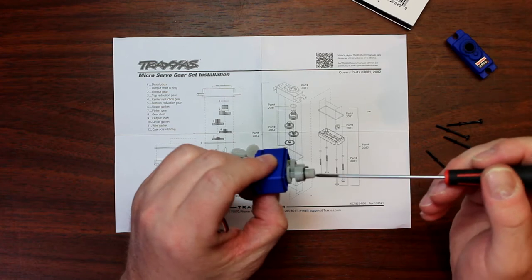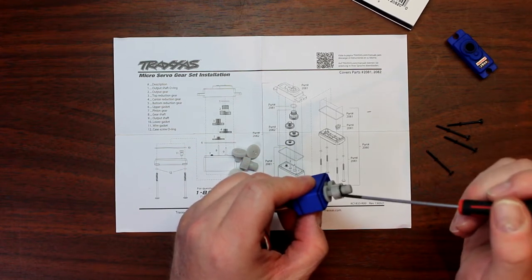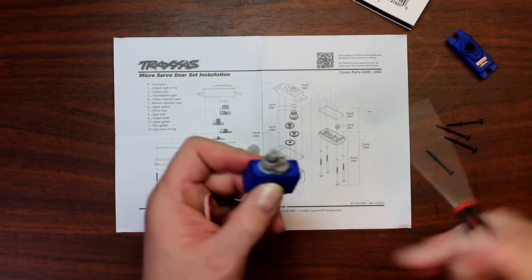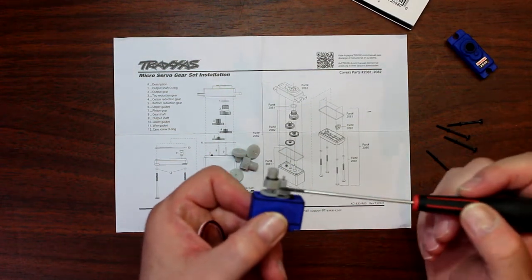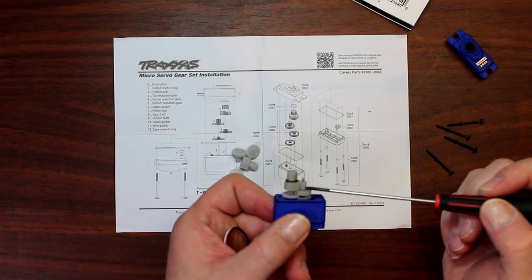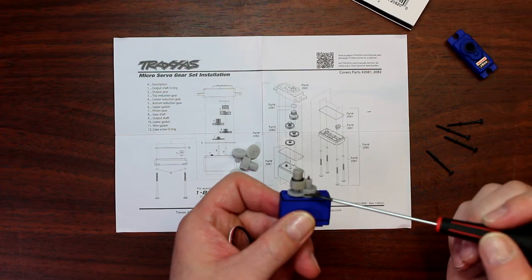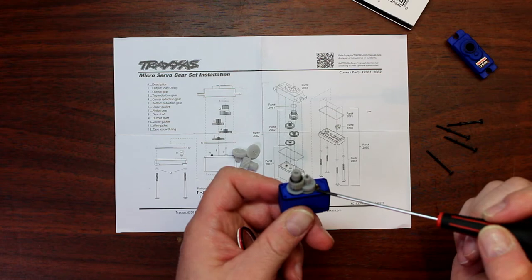You want to notice the output shaft o-ring that's right here, then you have the output gear. After that you'll have the top reduction gear, then the center reduction, and the bottom reduction that's right here.